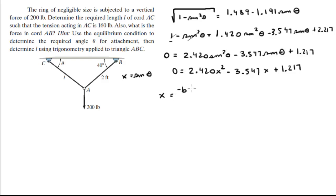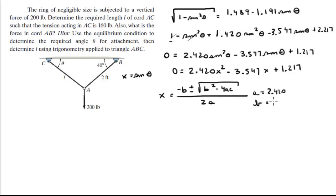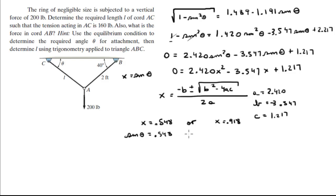Using the quadratic formula x equals negative b plus or minus square root of b squared minus 4ac, all over 2a, with a = 2.420, b = -3.547, and c = 1.217, we get x = 0.548 or x = 0.918. Since x equals sine of theta, theta equals sine inverse of 0.548 or sine inverse of 0.918, giving theta = 33.2 degrees or theta = 66.6 degrees.